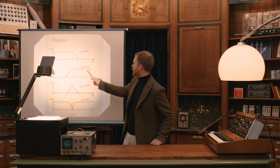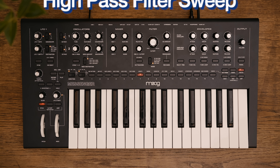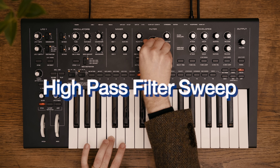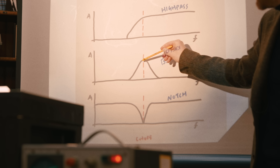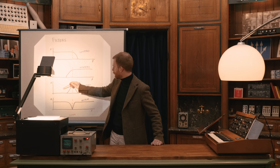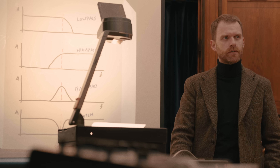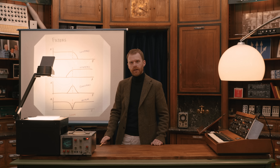A high-pass filter is the inverse, letting through frequencies above the cutoff and removing all of those below it. A bandpass filter, meanwhile, creates a narrow window to let frequencies through around the cutoff and removes all frequencies both above and below the cutoff. In this way, the bandpass filter is a bit of a combination of the low-pass and high-pass filters. And we saw bandpass filters when we looked at the hairs in the cochlea in the first lesson.